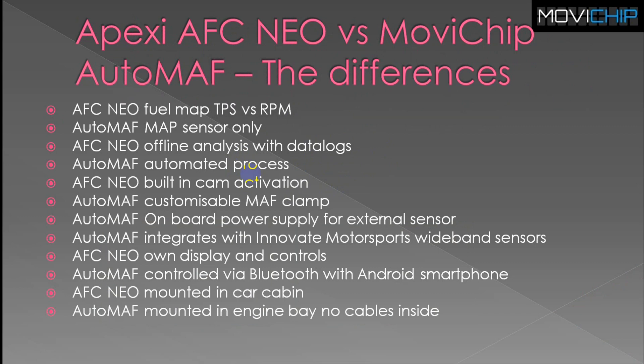The AFC Neo uses a map which puts TPS throttle position sensor against RPM. The Auto Math uses a MAP sensor only. AFC Neo is offline analysis with data log; Auto Math does it automatically, or you can do it manually if you choose to. AFC Neo has built-in camshaft activation for VVL and VTEC; Auto Math does not. Auto Math has a customizable MAF clamp so you can set the maximum MAF voltage you want to send to the ECU.